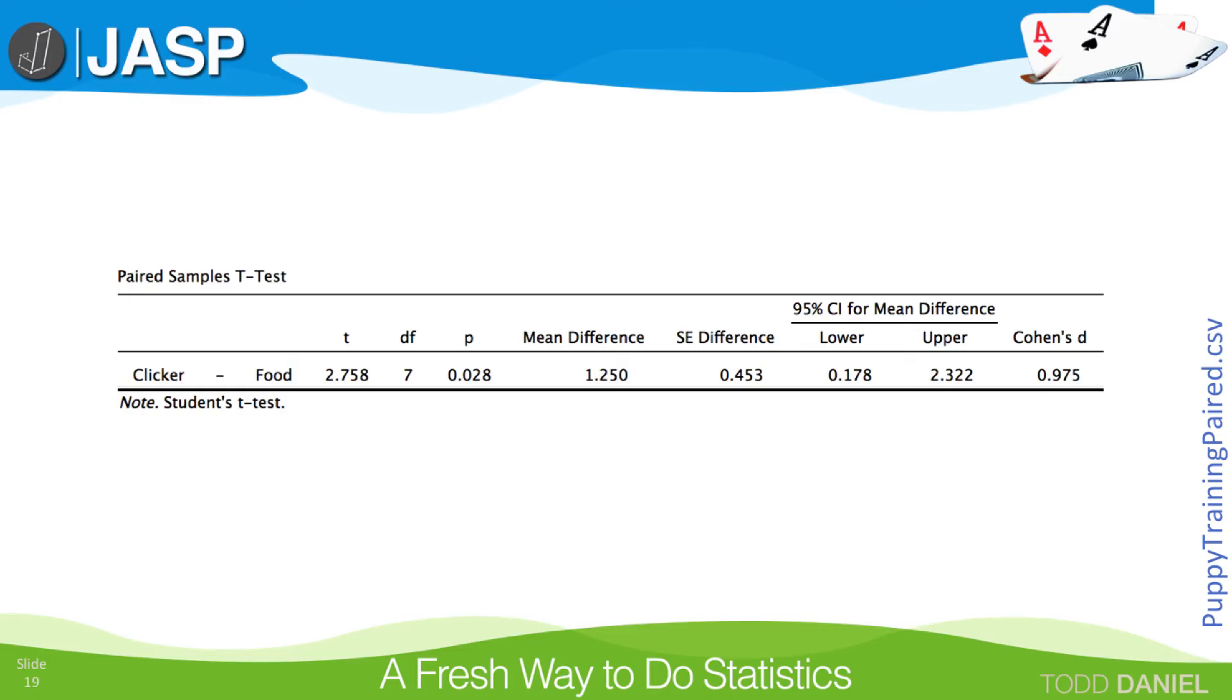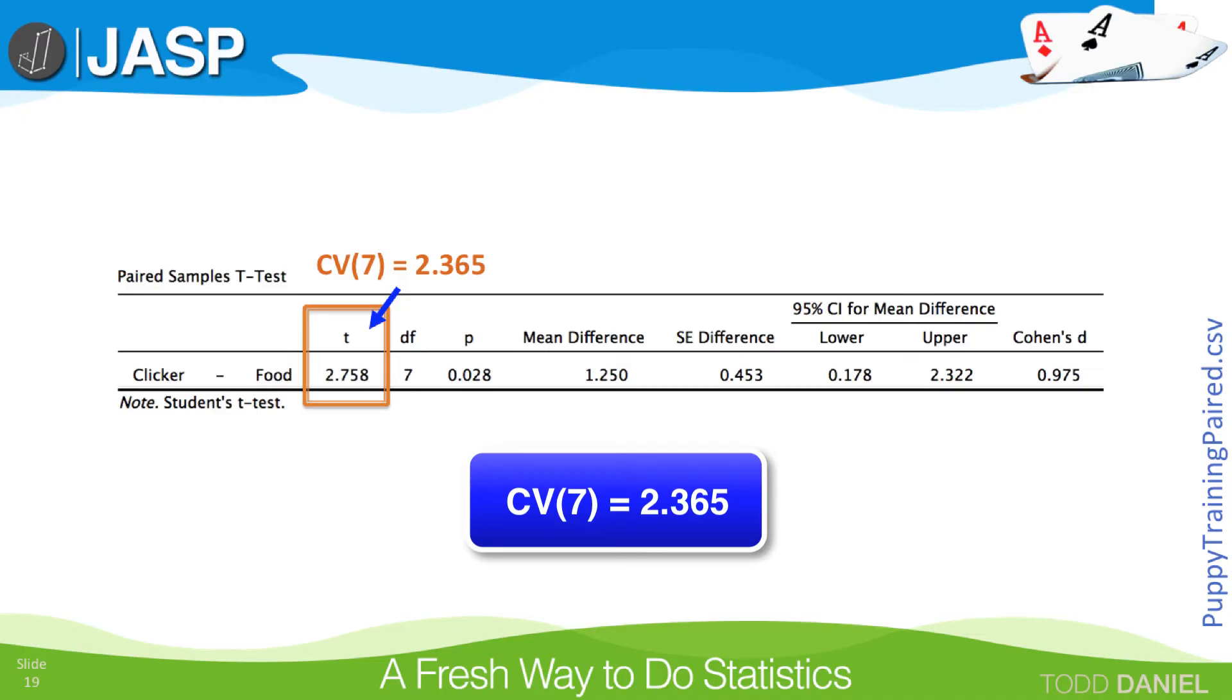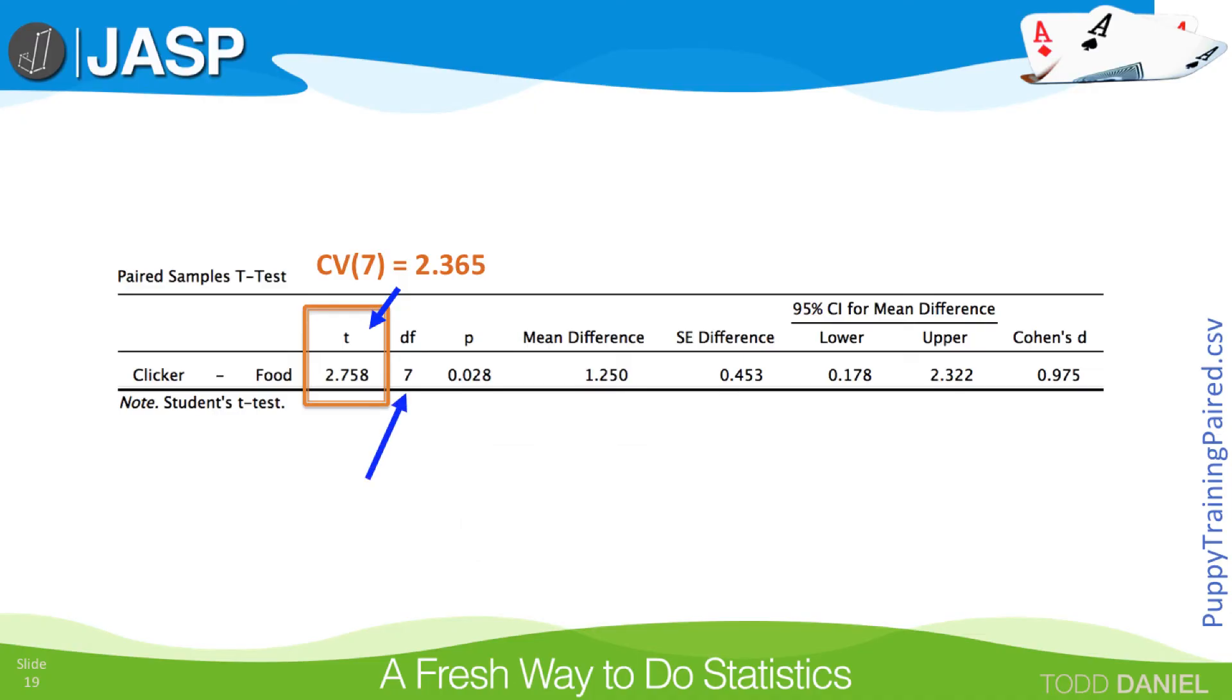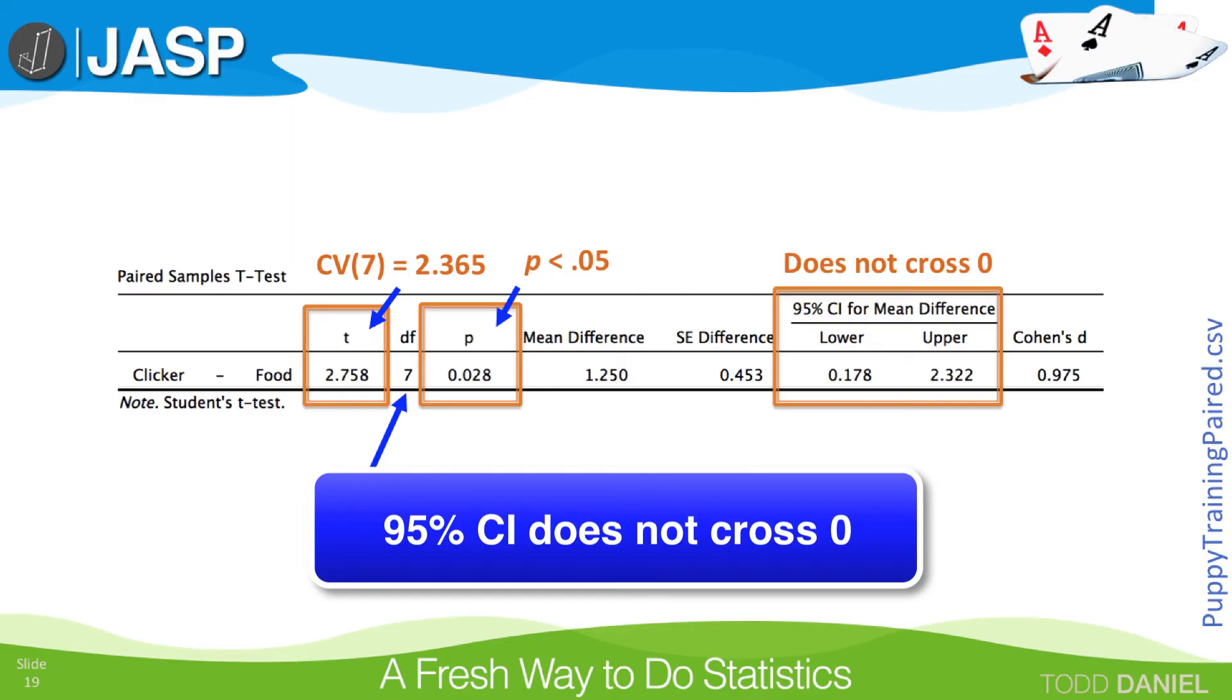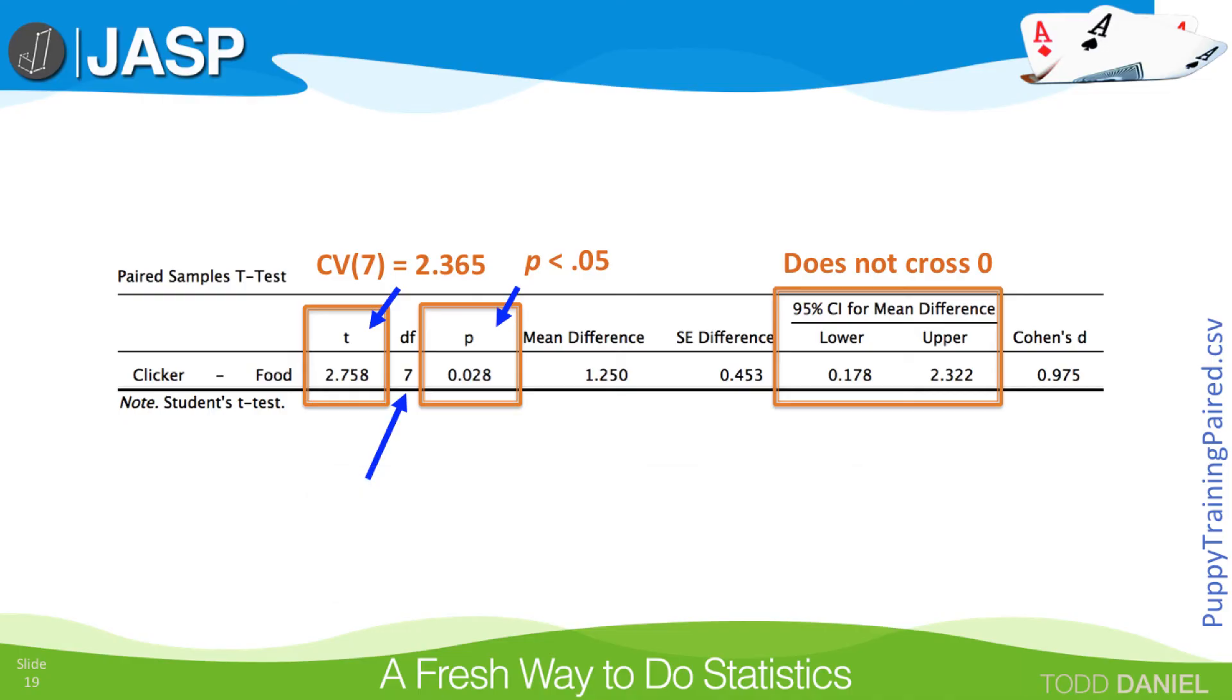So how can we interpret these findings? First, the t-test value is 2.758, which exceeds the critical value of positive or negative 2.365. Degrees of freedom is 7. We can see that the significance value for our t-test is 0.028, which is less than 0.05. And we also see that the 95% confidence interval for mean differences between paired sample means shows a lower bound of positive 0.178 and an upper bound of positive 2.322. Because this confidence interval does not cross zero, it does not include the null hypothesis value of zero difference. So the groups are different.